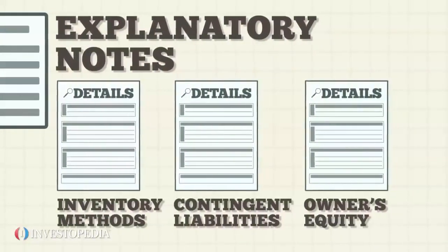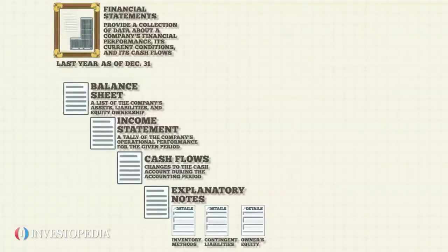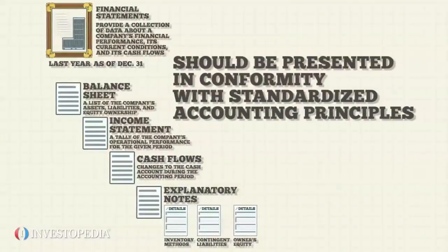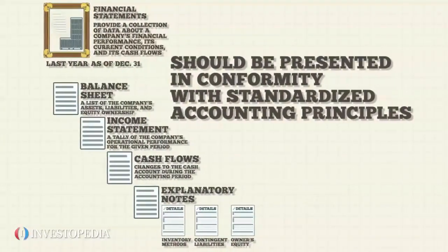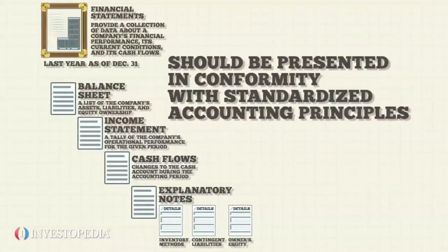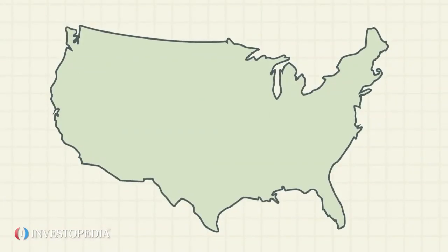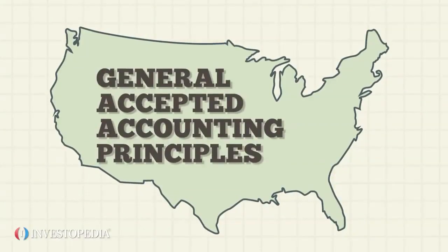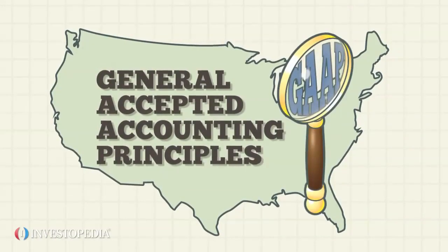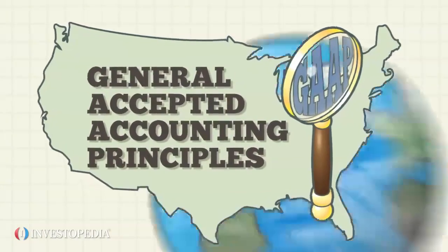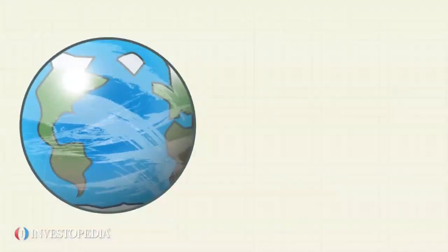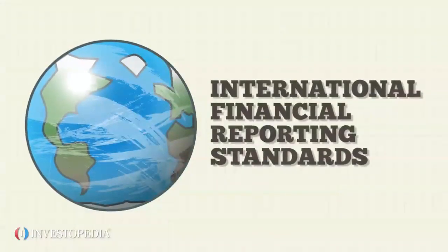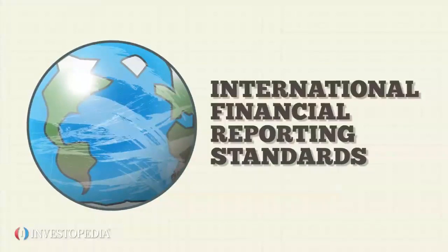All financial statements provided to outside parties should be presented in conformity with standardized accounting principles. In the U.S., those principles are called Generally Accepted Accounting Principles, GAAP. In other parts of the world, they are referred to as International Financial Reporting Standards.